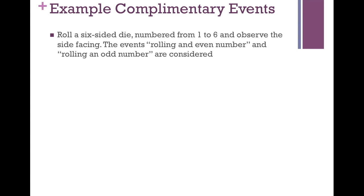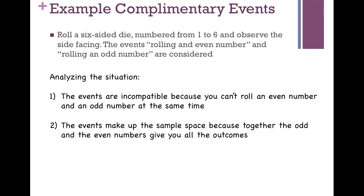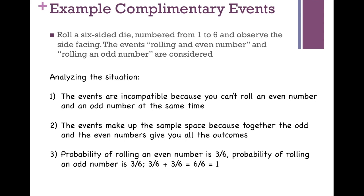Here's an example. With a six-sided die, the events rolling an even and rolling an odd number are incompatible and together cover the entire sample space: one, two, three, four, five, six. The probability of rolling an even number is three out of six because the even outcomes are two, four, six, out of six total. Similarly, the probability of rolling an odd number is also three out of six. Three out of six plus three out of six equals six out of six, which is one. Therefore, this is a complementary event.